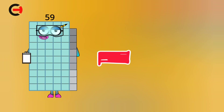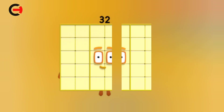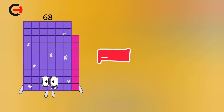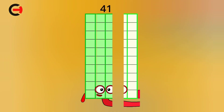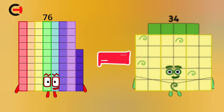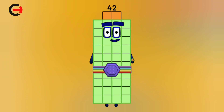59 minus 27 is equal 32. 68 minus 27 is equal 41. 76 minus 34 is equal 42.